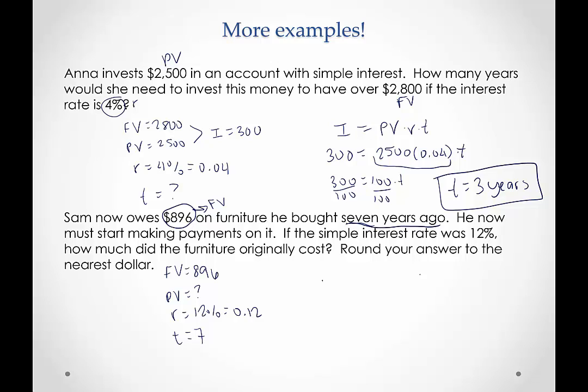So for this one, since we have our future value without our interest, we're going to use the future value formula: FV = PV(1 + rt). And the future value was $896. Present value is our unknown. Let's fill in the rest. The interest rate was 12% and the time was seven years. So we want to clean up what's inside the parentheses. Following order of operations, we're going to do that multiplication first. 0.12 × 7 = 0.84, and then plus 1 is 1.84.